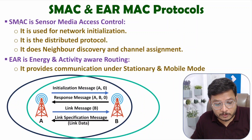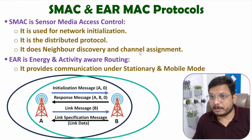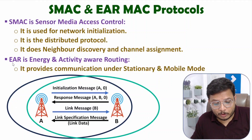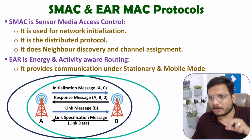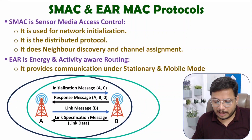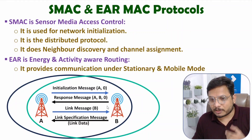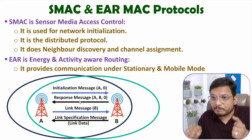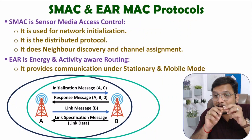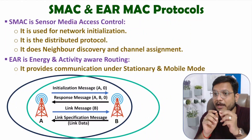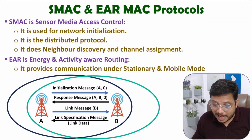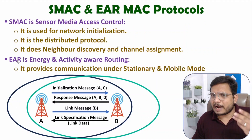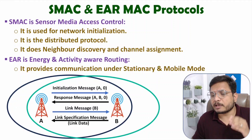EAR protocol performs energy-efficient routing. As B moves around relative to A, the transmission power must adapt: if B is moving nearer to A, transmission power should go down; if B is moving farther from A, transmission power should go up. That is defined by EAR protocol, and this is how these two protocols play essential roles in media access control.